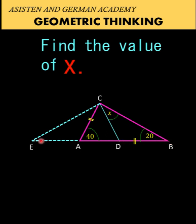Since the base angles of triangle ECB are equal, both are 20 degrees, that means triangle CEB is an isosceles triangle. Therefore, side EC is congruent to side BC.